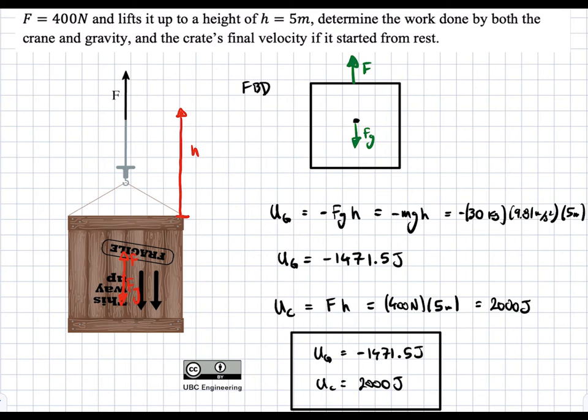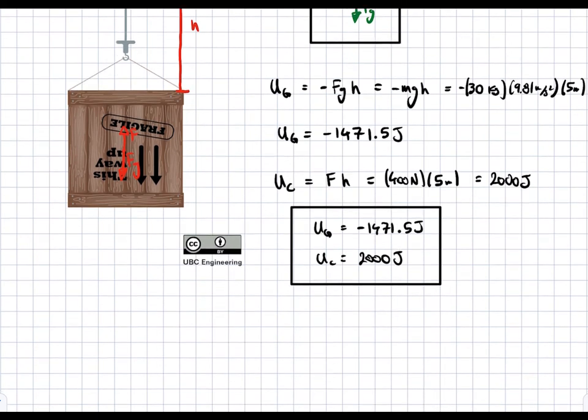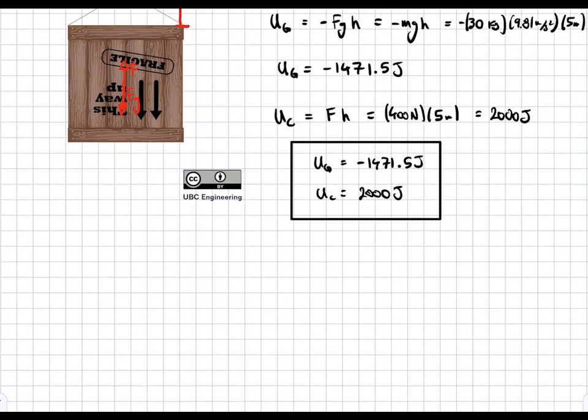So since we have a difference in force, we're going to have an acceleration. And so we can calculate the final velocity after five meters have traveled. The formula we're going to use is from kinetics, which is V final squared is equal to V initial squared plus two A acceleration times D, which is the distance traveled.